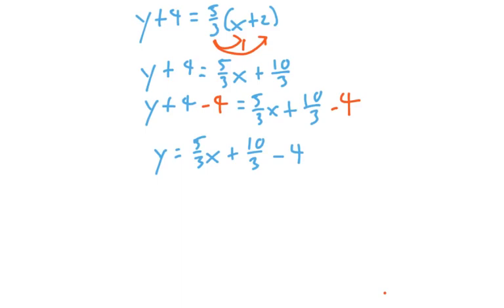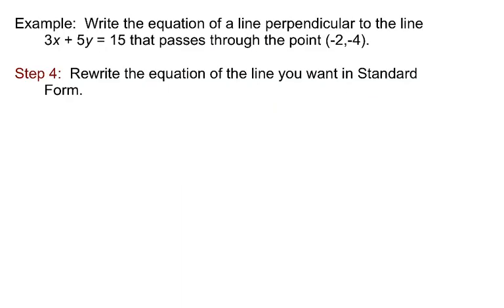However, we usually want to take that line and write it in standard form, so I want to show you how we do that. So let's remind ourselves where we are right now: y equals 5/3 x plus 10/3 minus 4. Standard form again, Ax plus By equals C, that's what we're aiming for. So you'll notice that that involves getting the x and y terms together on the left and the constants on the right. And you may also remember that I said that the A, the B, and the C have to be integers, that means they can't be fractions.